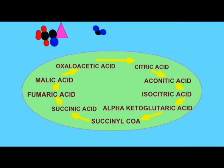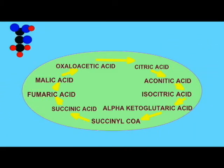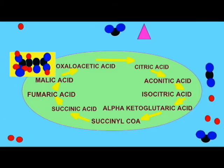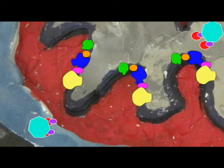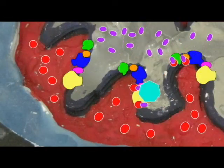All eukaryotes use cellular respiration to generate the majority of ATP that they use for energy, and this requires oxygen. The Krebs cycle, part of cellular respiration, creates carbon dioxide as a waste.